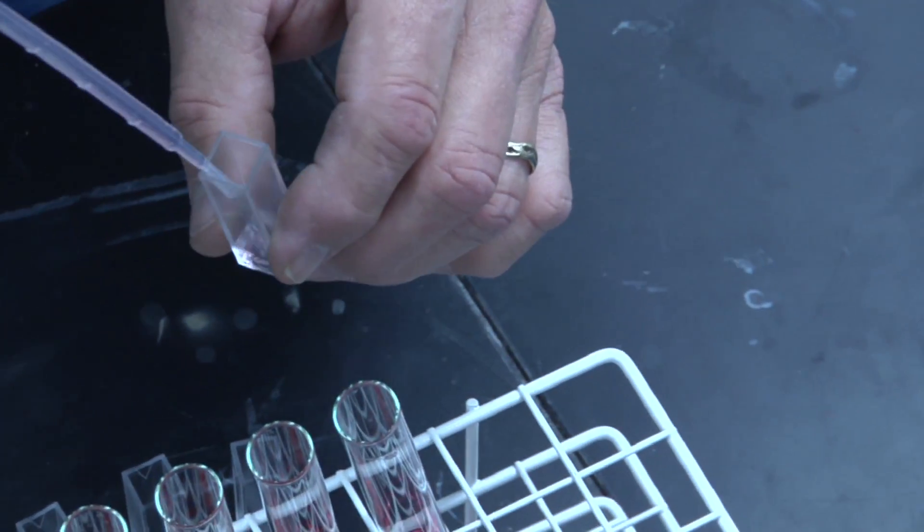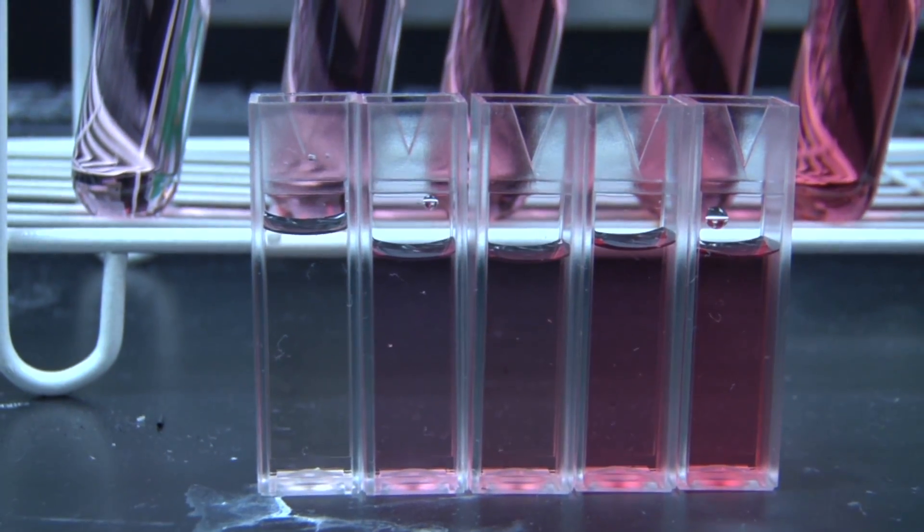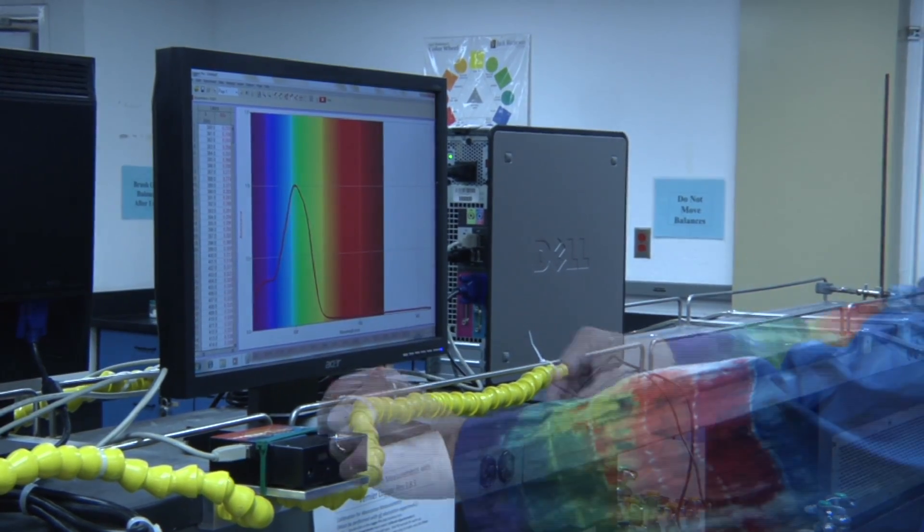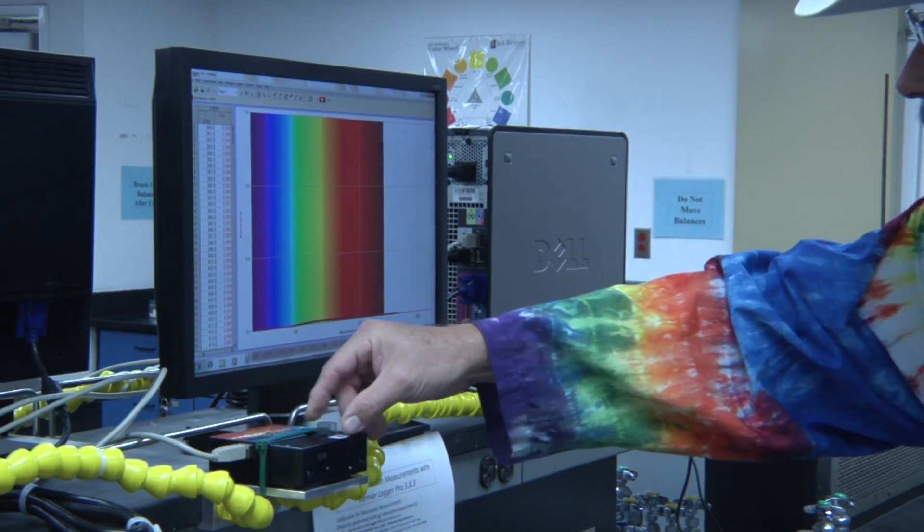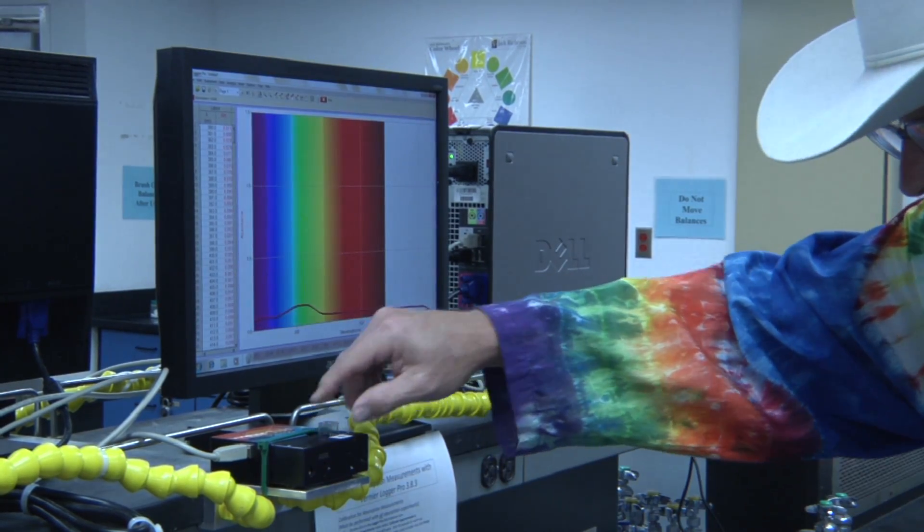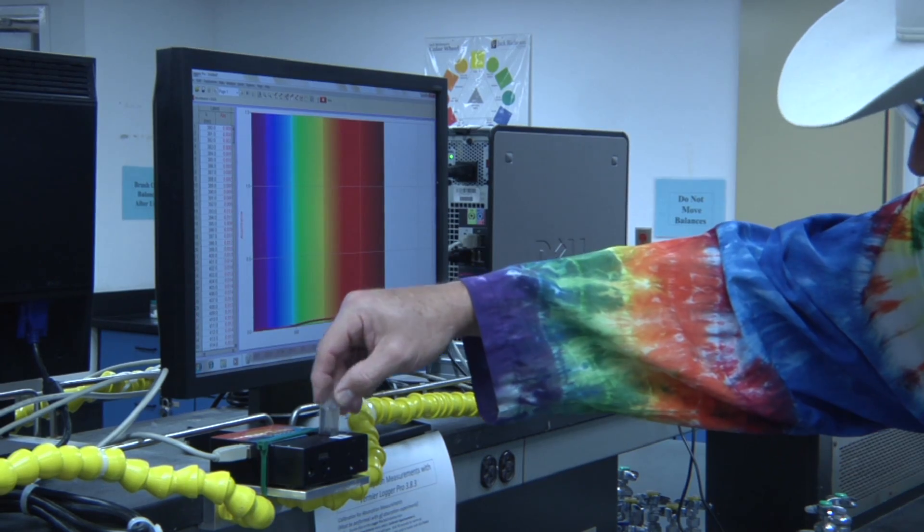Now you can transfer the solutions one at a time to a cuvette. Measure the absorbance of each solution at the wavelength of maximal absorbance you identified earlier. You now have enough data to plot absorbance versus concentration and determine the molar absorptivity of your dye.